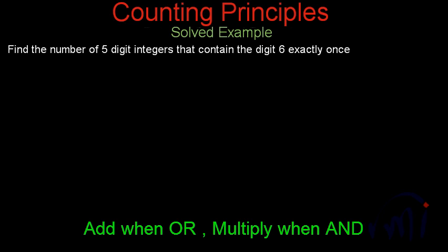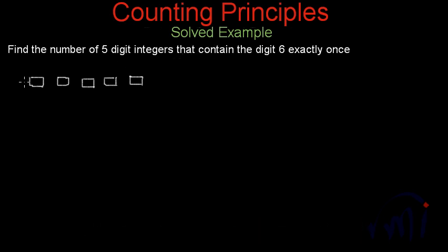The problem statement says: find the number of 5-digit integers that contain the digit 6 exactly once. We are talking about a 5-digit integer, meaning we have 5 places to fill, and the condition is that there is exactly one 6 in the number. The digit 6 appears in one of these 5 places and appears only once.